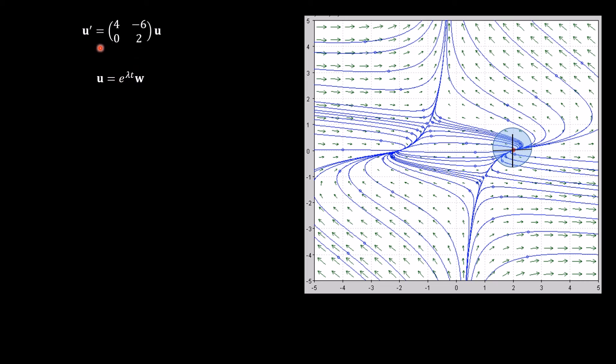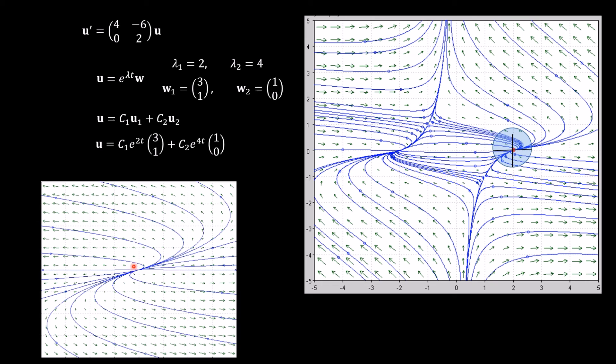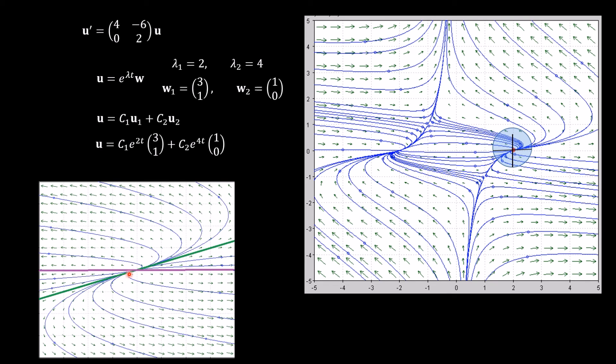We're going to solve the linearization now. So of course we're going to assume, as always, that our solution will be of the form e to the lambda t times a vector w. And we just need to find the eigenvalues. Here they are. And the eigenvectors. Here they are. And then our solution is this, which gives us this picture, where the green is the vector 3, 1, and purple is the vector 1, 0. So the solutions depart the origin along the green line, but then veer off and move in the direction of the purple line, because 4 is the dominant eigenvalue over 2. So therefore this vector, the purple vector, dominates over the green vector in the long term. So solutions veer off along the purple vector.